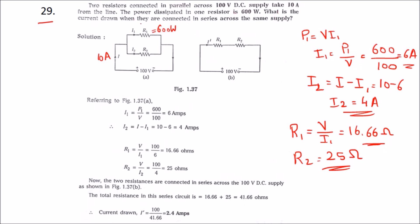What they're asking is what is the current drawn when these two resistors are connected in series. If R1 and R2 are connected, in this case we have to add. So 16.66 plus 25 will be 41.66 ohms. So we got the total resistance.